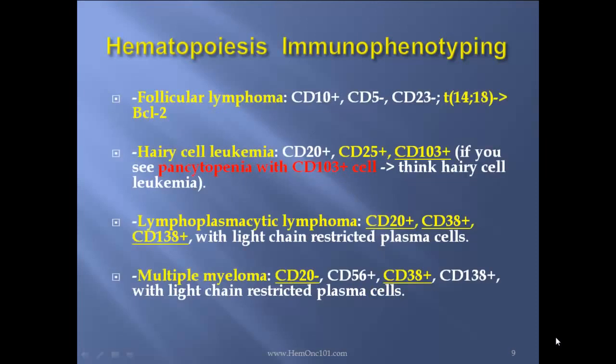Follicular lymphoma will be CD10 positive, CD5 negative, CD23 negative, with translocation 14;18 — BCL2. Hairy cell leukemia — you absolutely must know — CD25 positive and CD103 positive. So if you see pancytopenia with CD103 positive cells, think hairy cell leukemia. Lymphoplasmacytic lymphoma — Waldenstrom's — CD20 positive, CD38 positive, CD138 positive. Myeloma will be CD20 negative, CD38 positive, CD138 positive. The difference between the two will be CD20.